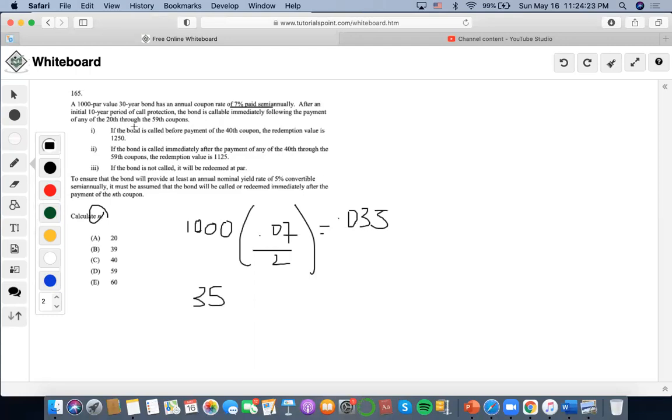Now for the first part, it says if the bond is called before payment of the 40th coupon, the redemption is $1,250. They're giving us a redemption value, so that means we want to first determine whether this bond being called is either discount or premium. How do we do that? We conventionally compare the coupon rate to the yield rate. If the coupon rate is greater than the yield rate, the bond is being sold at a premium. If the coupon rate is less than the yield rate, then the bond is being sold at discount. And if both are equal, then the bond is being sold at par.